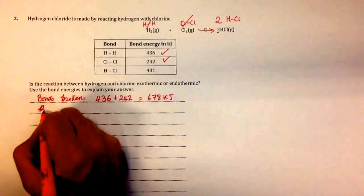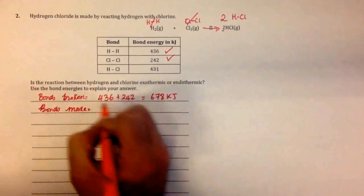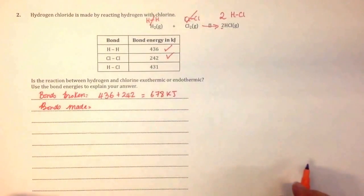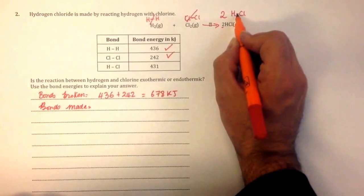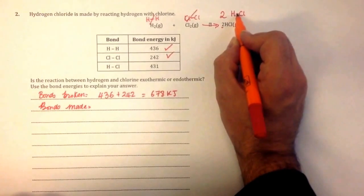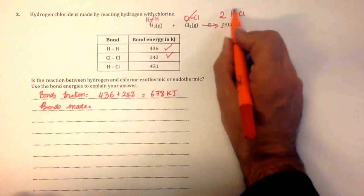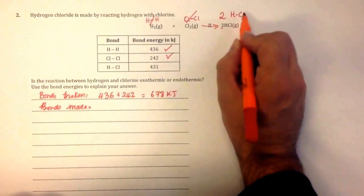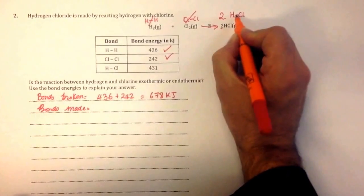Then you think about the bonds that are made. Remember, the bonds that are made are the ones on the right-hand side of the equation - they're the products. Every molecule of HCl has one hydrogen-chlorine bond, which I've shown using the dash like that. But there are two molecules of hydrogen chloride gas, so you need to multiply that number by two.